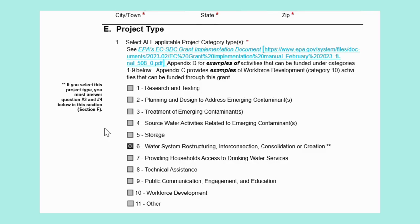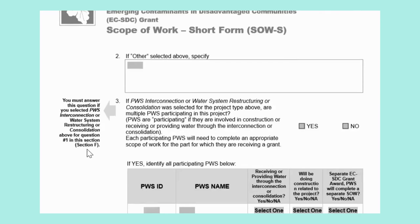During this process, we will also be upgrading and raising the elevation of a pump to above the 100-year flood elevation, to pressurize the system to serve the consolidated systems and address flooding conditions. This project also requires planning and design, so we will select category 2 as well. If you selected category 6 — water system restructuring, interconnection, or consolidation — questions 3 and 4 will apply to your project and responses are necessary. If this is not applicable to your system, you may skip these two questions. In our case, these questions are applicable.